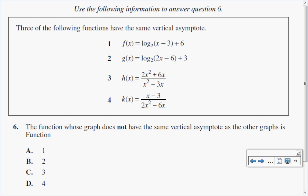In this multiple choice question I have four functions listed and three of them have the same vertical asymptote. I want to find the one function that does not have the same vertical asymptote as the others. Let's look at how we can simplify this.